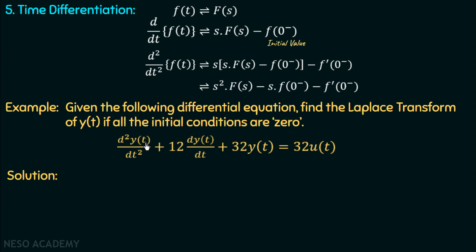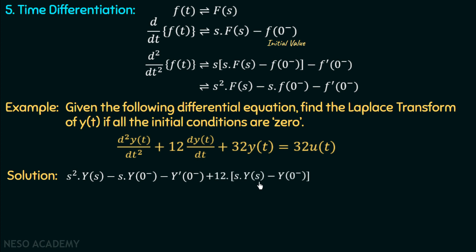If the Laplace transform of y(t) is Y(s), then the Laplace transform of the second order derivative of y is s²·Y(s) minus s·y(0⁻) minus y′(0⁻). Similarly, the Laplace transform of dy/dt is s·Y(s) minus y(0⁻), multiplied by 12. The Laplace transform of 32y is 32·Y(s). On the right hand side, the Laplace transform of u(t) is 1/s, so we have 32·(1/s).